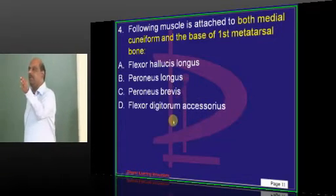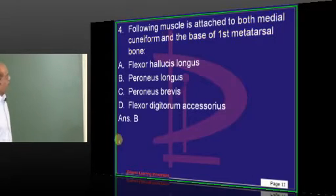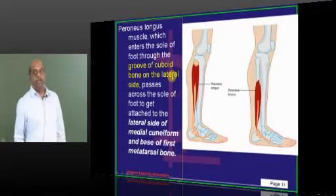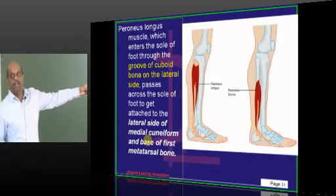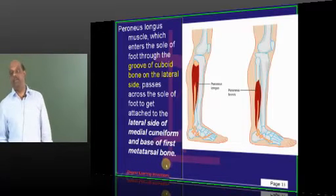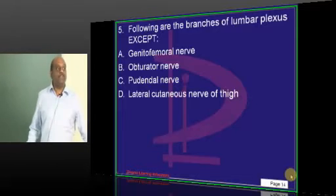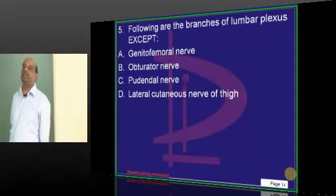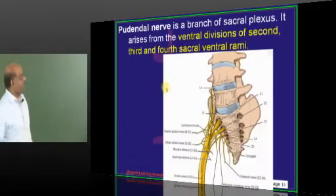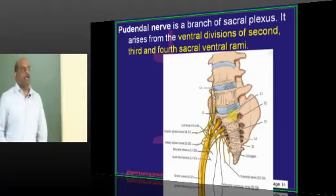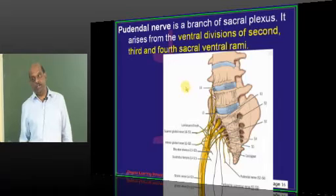What is the classical muscle which is very important as an inverter of our foot? We have the peroneus longus. It passes through a groove in the cuboid on the lateral aspect and goes and attaches to the lateral aspect of medial cuneiform and also the base of the first metatarsal bone is what you need to ultimately remember. What is a branch of sacral plexus instead of lumbar plexus out of all this? Pudendal. Excellent, doctor. Pudendal nerve comes from the ventral division of S2, S3 and S4.